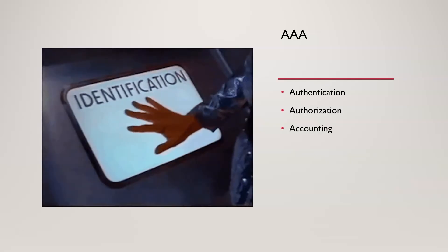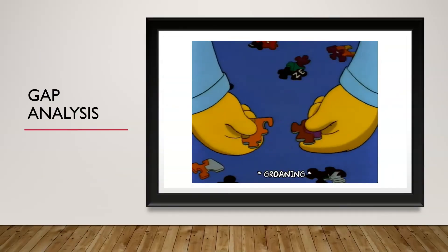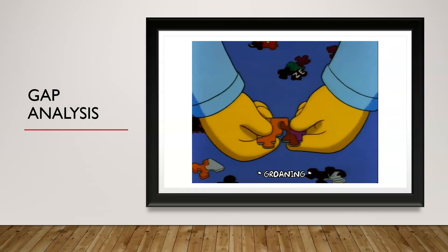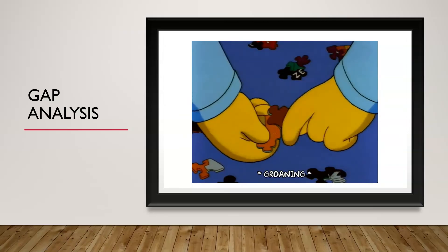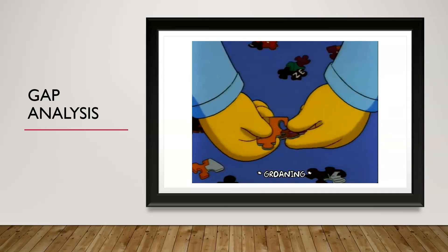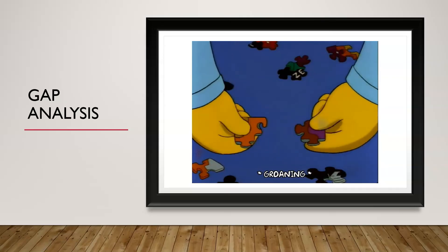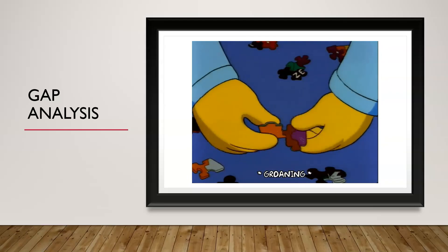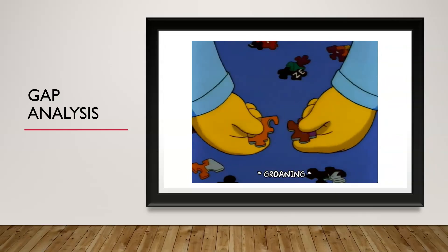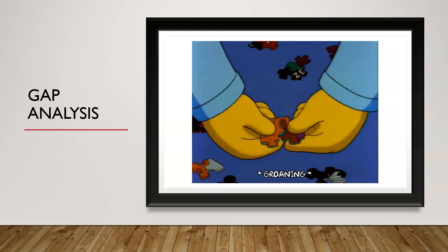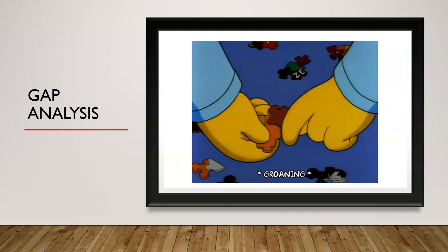Finally, we have gap analysis. It's a process to assess the difference between our current state and the state we want to reach. In cybersecurity, we analyze our current security posture and identify where we want to get to. Are there vulnerabilities or weaknesses? Spoiler alert: there are always areas to improve in security. Gap analysis helps us identify where those gaps are and how we can get better — whether through implementing more security controls or optimizing processes.